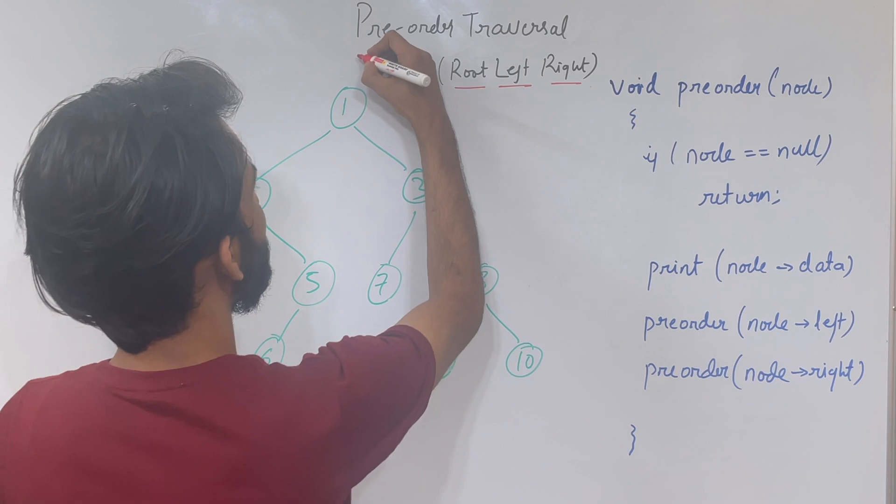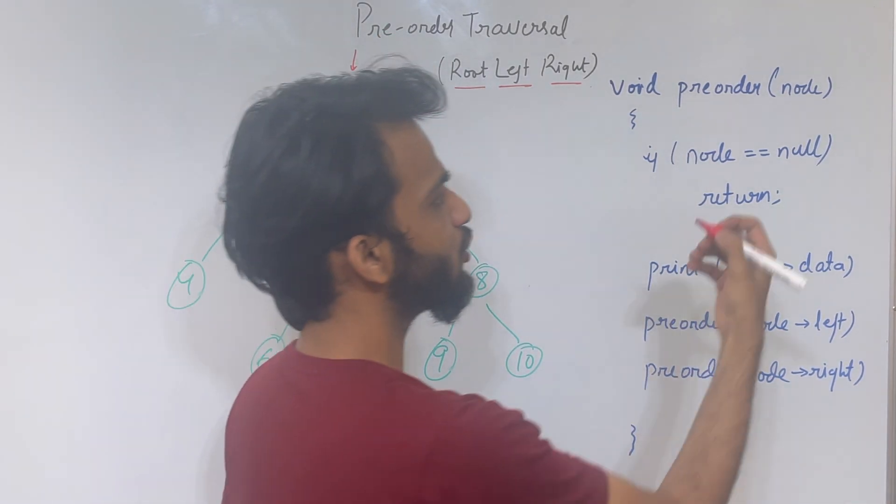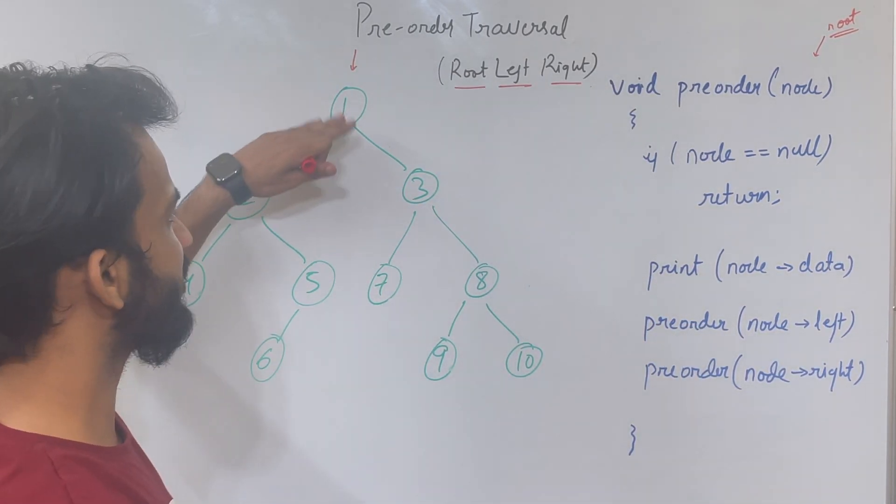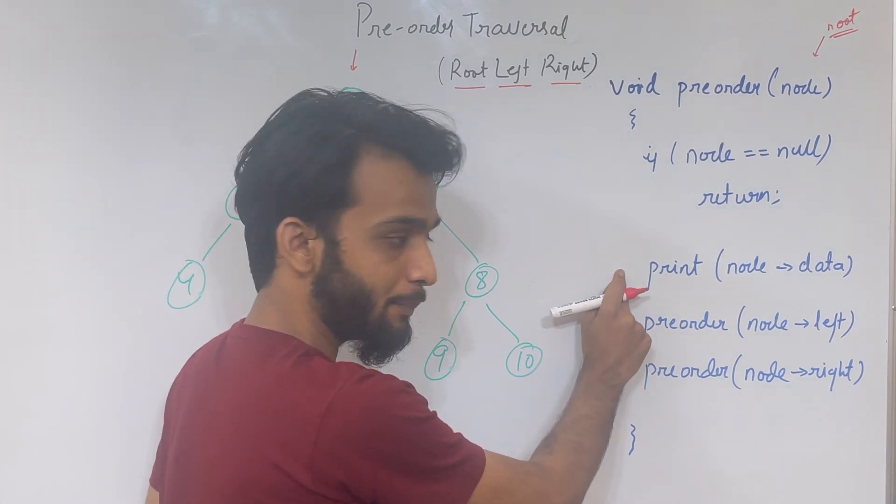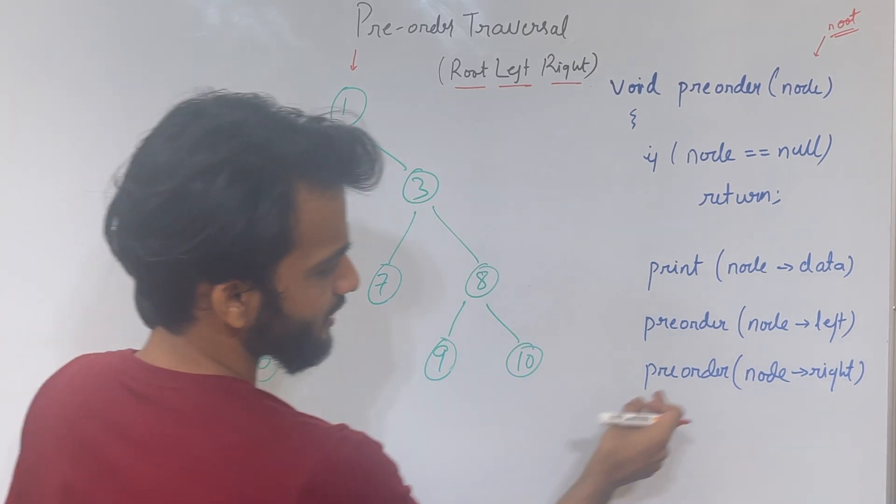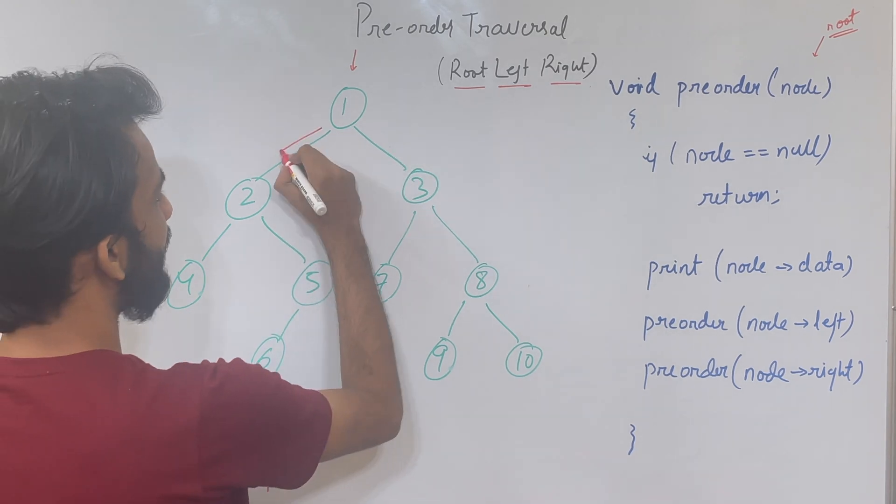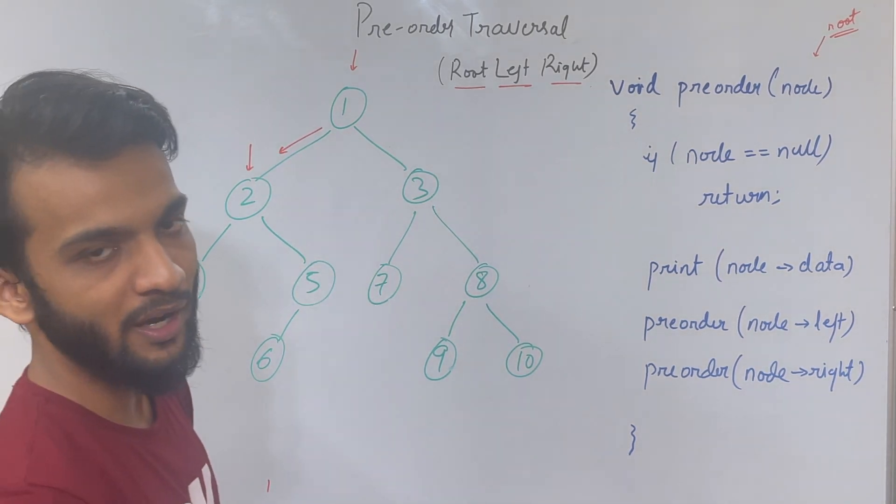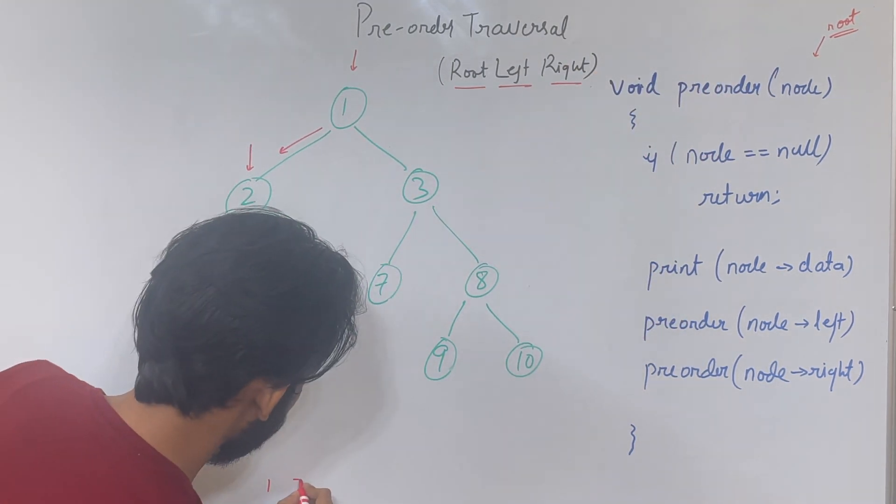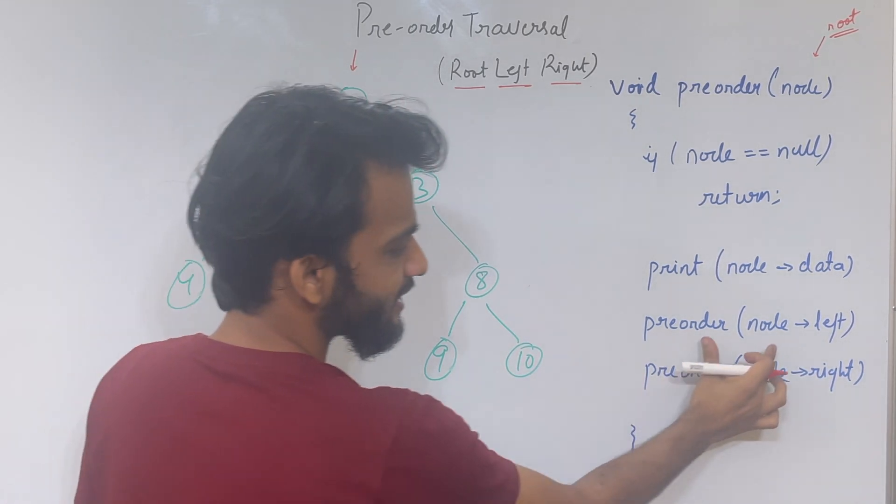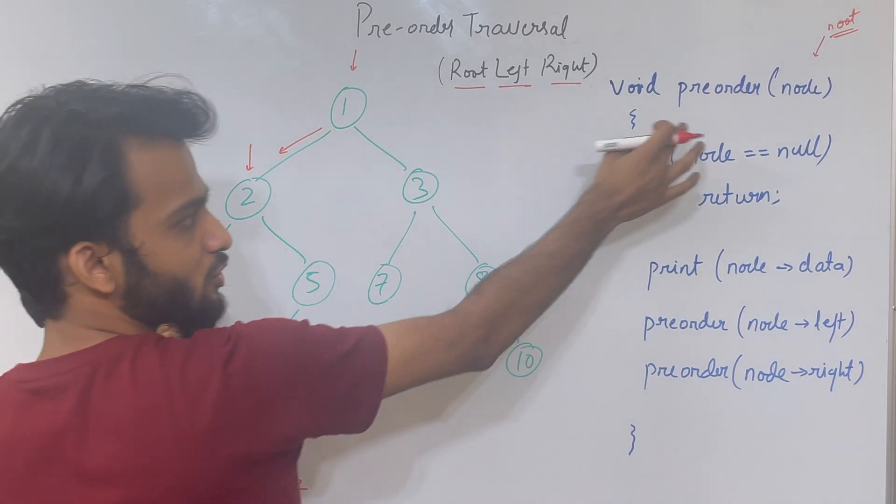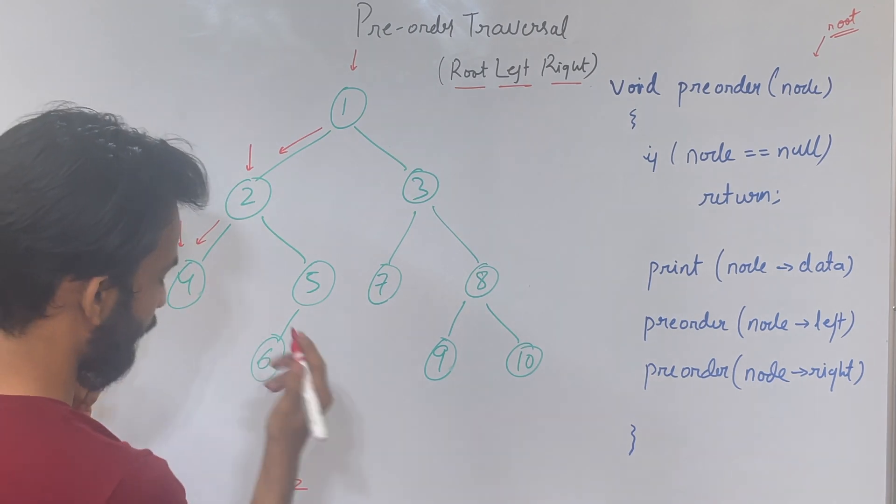Initially we start from the root. The call comes for the root of the tree, so we start from the root. Comes to the first line: print. So we print 1. Next, it says node's left, so we come to node's left and stand here. For node 2, it comes across print, so 2 is printed. Next is again left, so we come to left and stand here. For node 4, the pre-order is called: print, so 4 is printed.